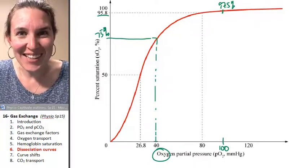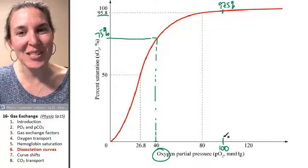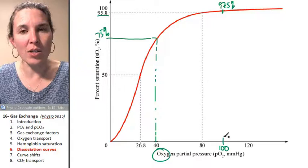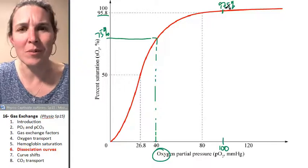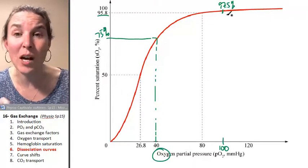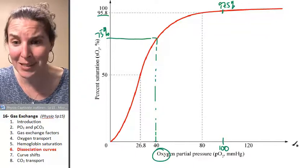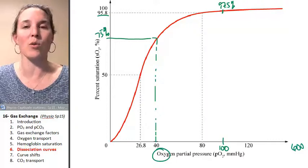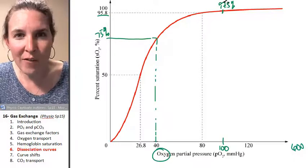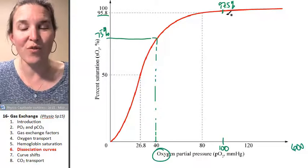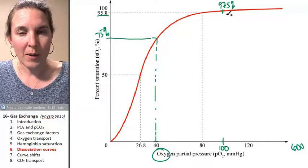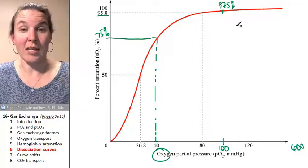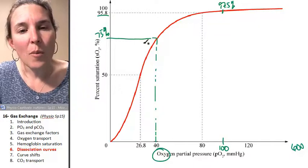The significance of this is, at a partial pressure that you see in the alveoli, all of the seats for oxygen are going to be filled, most of them, 97%. In fact, you don't even get up to 100% unless you go all the way up to like 600 millimeters of mercury of oxygen, which none of us are ever going to be exposed to. So we will never have all of our hemoglobin molecules full of oxygen. But you're 97.5% full. That's awesome. That's a great load.